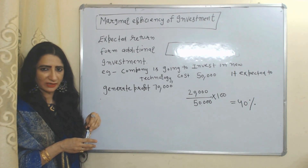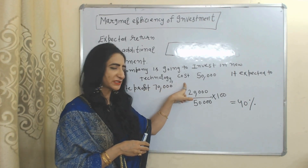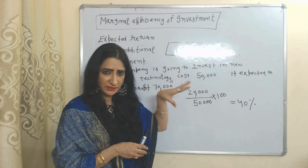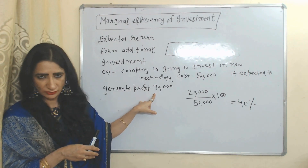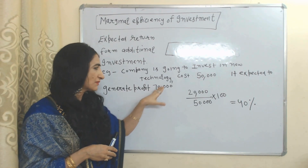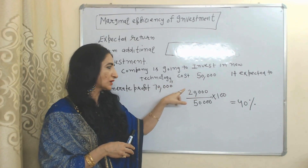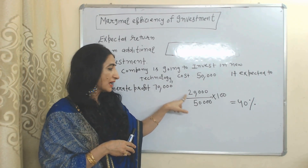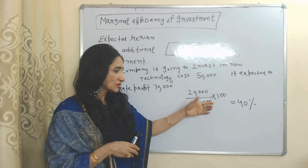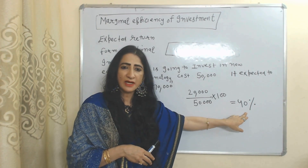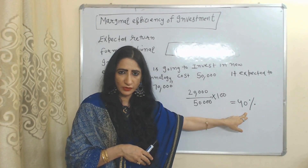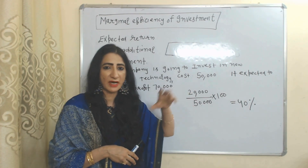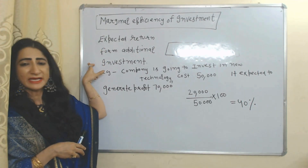Suppose a company is going to invest in new technology and the cost of this technology equals 50,000. The company's expected profit from this technology is 70,000. So 70,000 minus 50,000 equals 20,000, which is the expected profit, and the cost is 50,000. Therefore the expected return equals 40%. This expected return is called the marginal efficiency of capital.